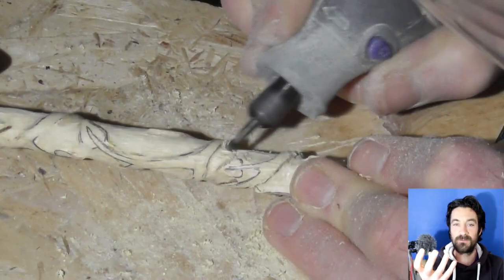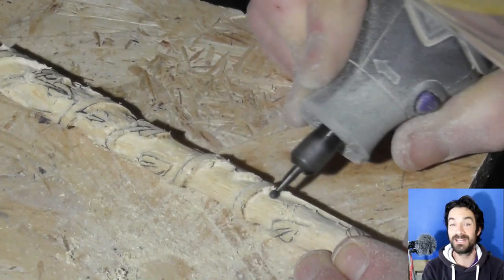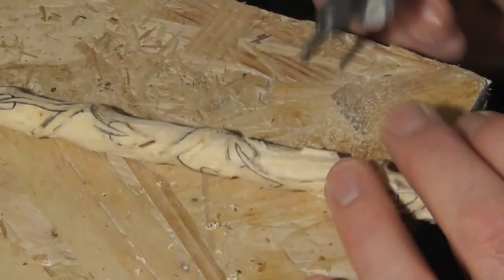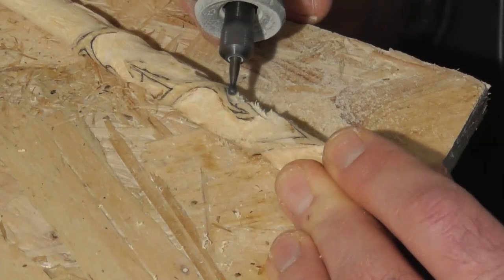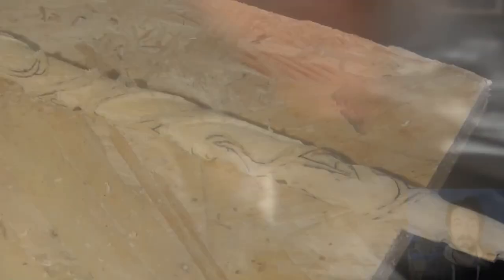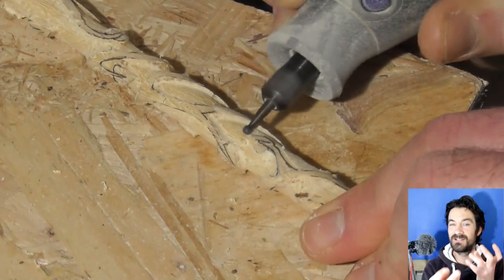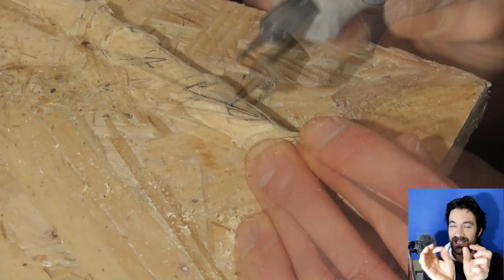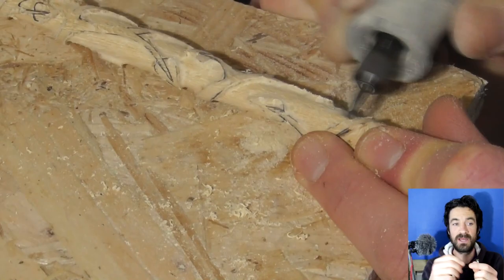Once I'd used that routing tool or the engraving tool to actually smooth out the edges to really define the points of the ivy tendrils going along, I then used it to go all the way over the entire surface and just flatten off all the bumps that were made by the sanding drums.